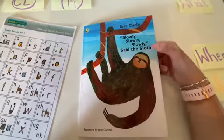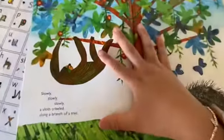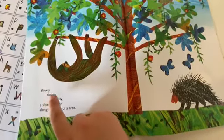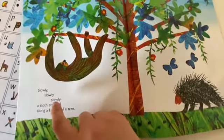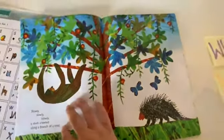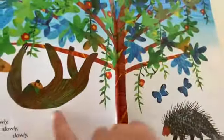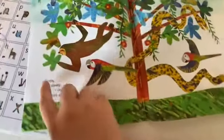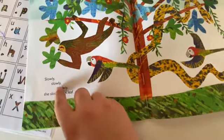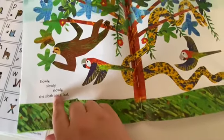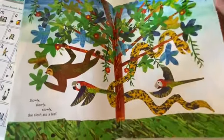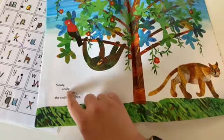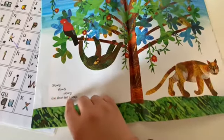First of all I'm going to read the book. Let's see if you can remember how it starts. Slowly, slowly, slowly, a sloth crawled along a branch of a tree. Slowly, slowly, slowly, the sloth ate a leaf. Slowly, slowly, slowly, the sloth fell asleep.